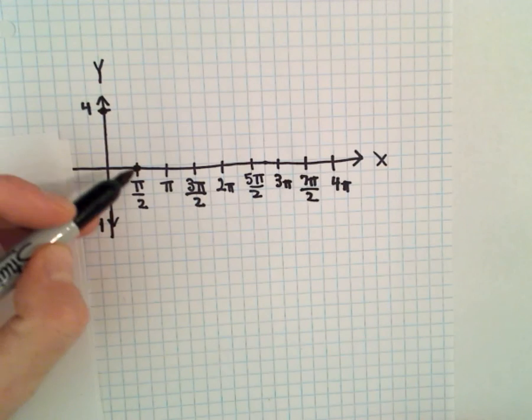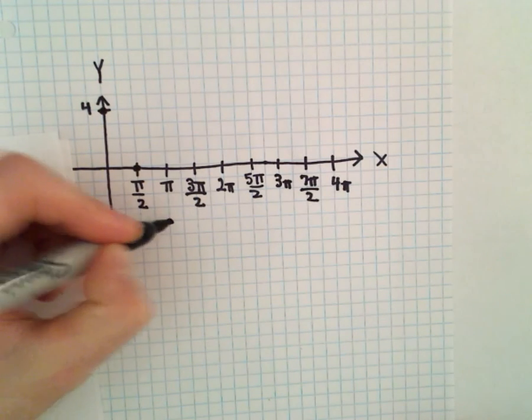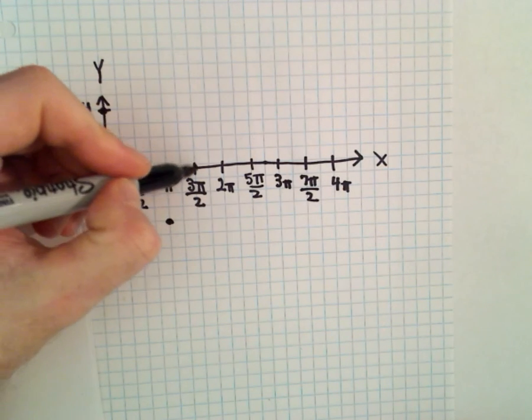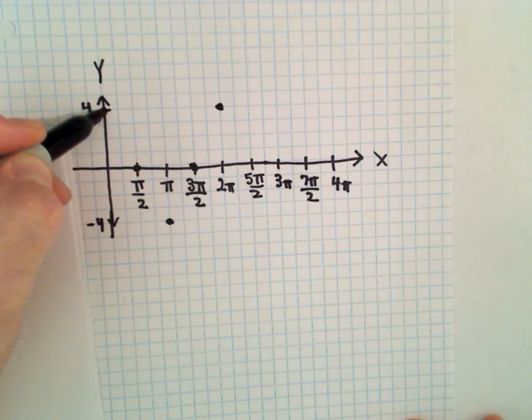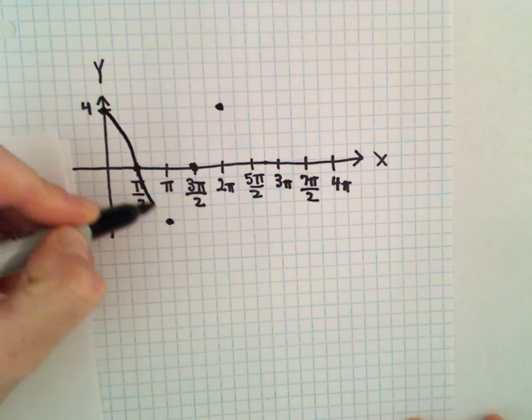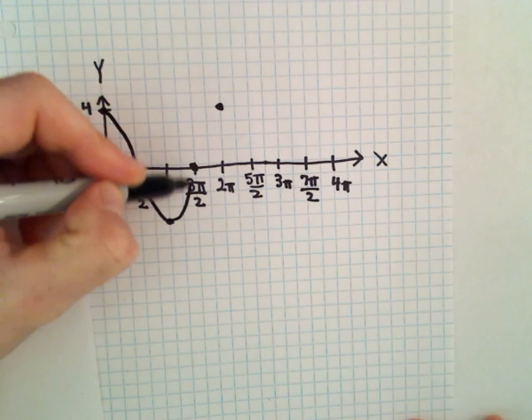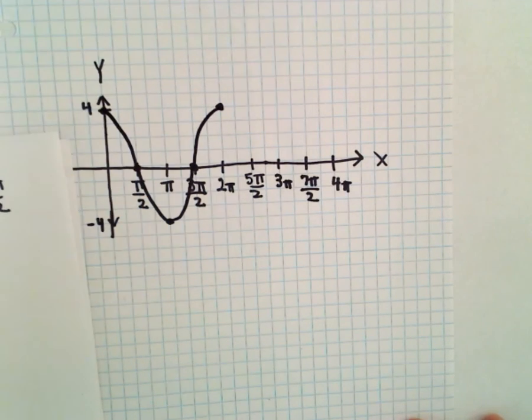Back up to zero, and then I'll be back up at positive four, and that'll roughly be a little sketch of one period of cosine.